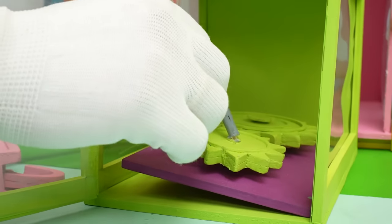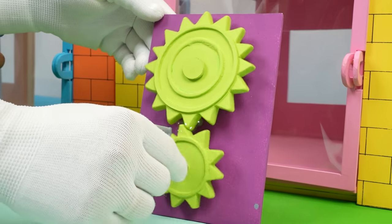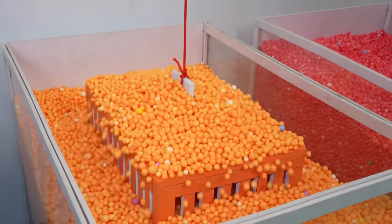Green teeth gears are inside. Let's see what it does. Wow, an orange cage comes out from the orange balls! Whoa, so many balls!